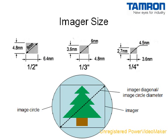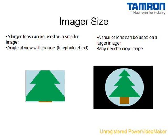Different cameras are equipped with different imager sizes depending on the type of imager and the number of pixels. Standard imager sizes are referred to in units of inches, although this is not an accurate indication of the actual size of the imager. Lenses are designed to focus an image onto the imager so that the diameter of the image circle matches the diagonal of the imager. A one-third inch lens therefore has an image circle diameter of at least six millimeters to cover the six millimeter diagonal of the one-third inch imager. A larger lens can be used on a smaller imager; in this case, because the image captured by the lens will be larger than the imager, the angle of view of the image will become smaller, resulting in a telephoto effect.